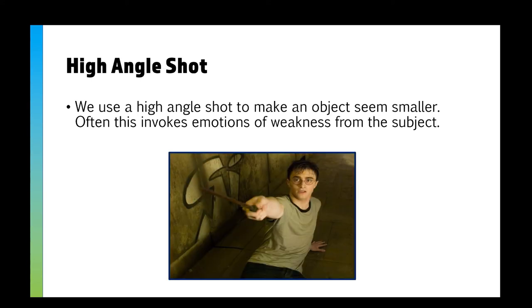Similarly, we can do the opposite and use a high angle shot to make an object seem smaller, which gives the idea of weakness. Harry Potter is trying to fight a Dementor in this scene, and the high angle shot shows that he's smaller — maybe not as powerful as a Dementor — and shows his struggle, suggesting he's scared and frightened, as he is in the scene.